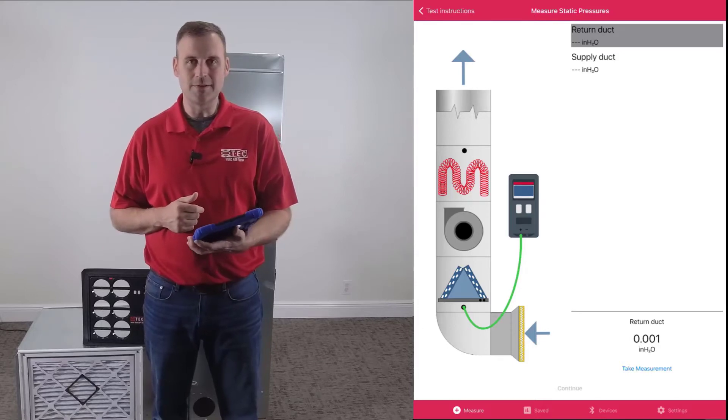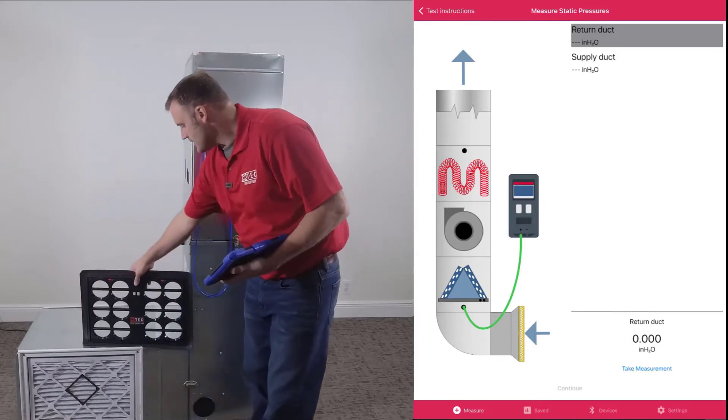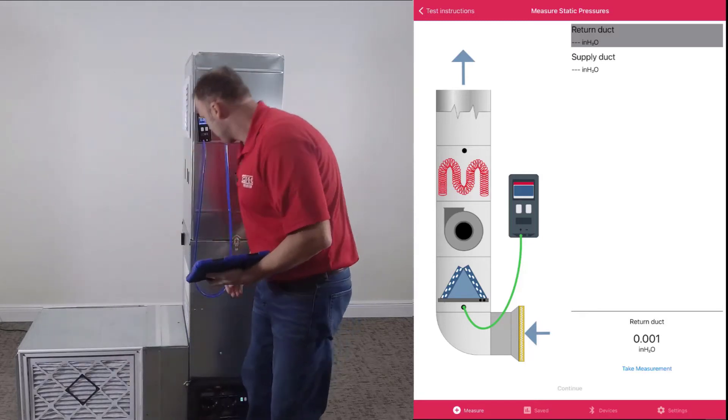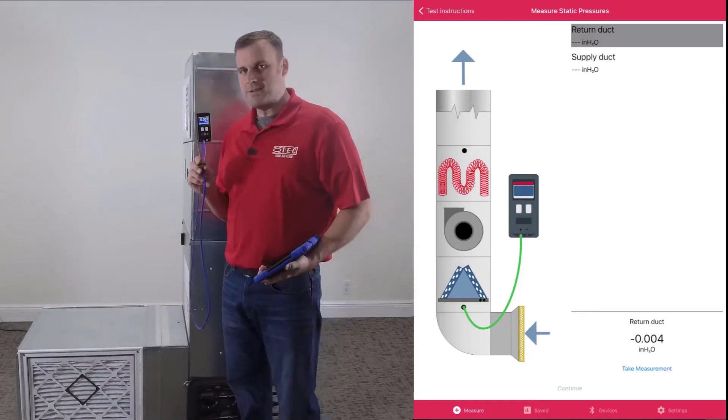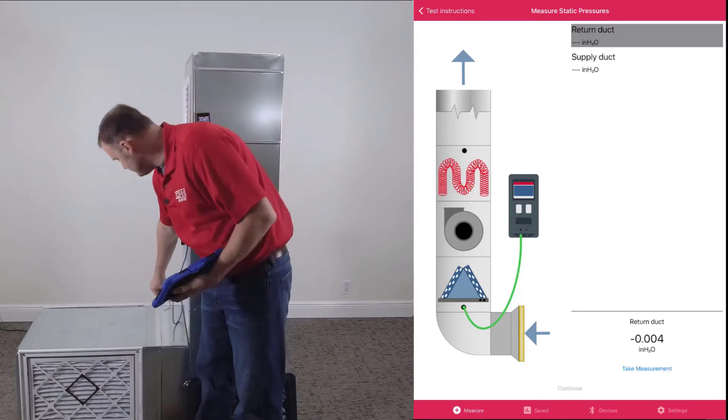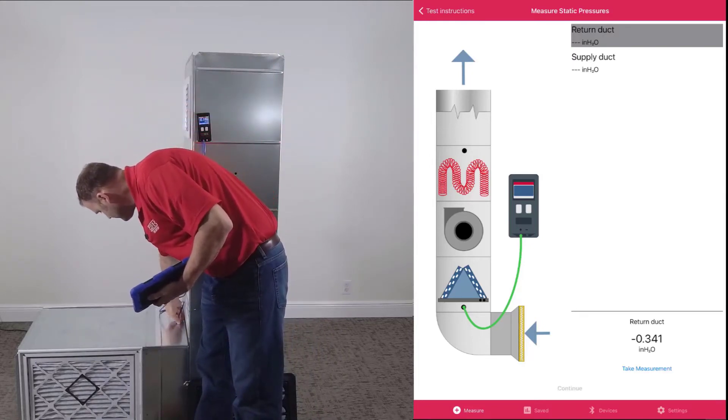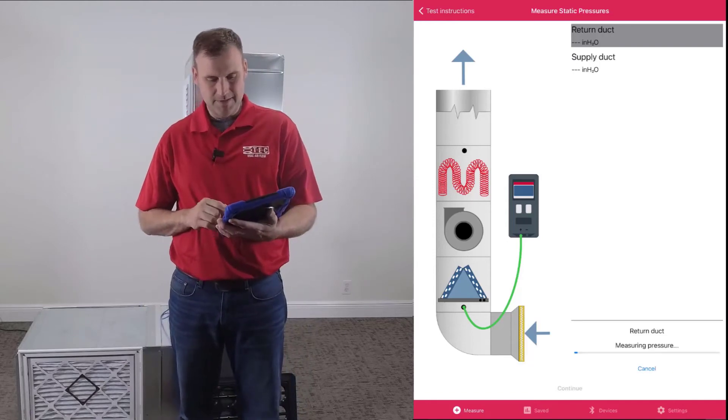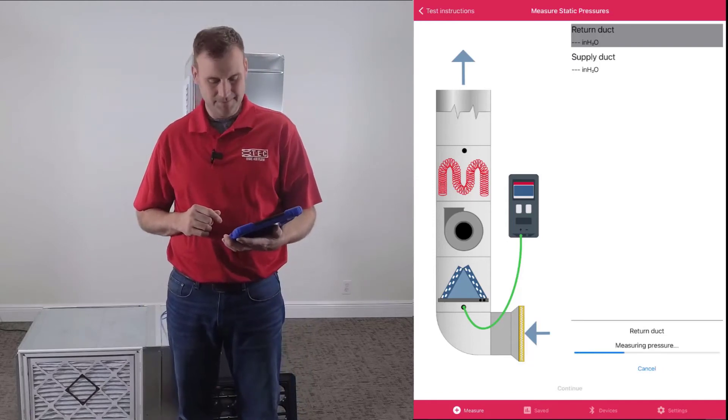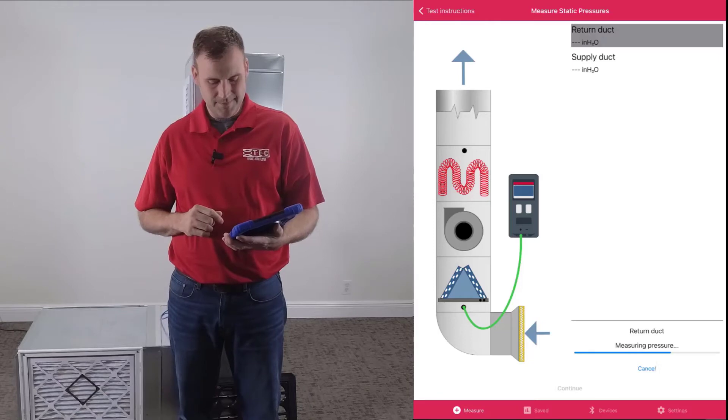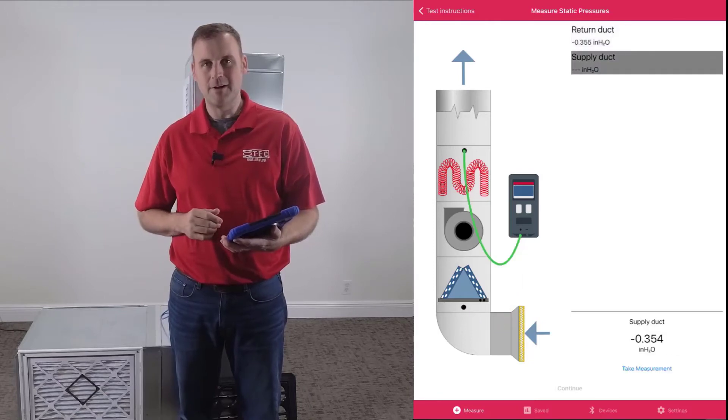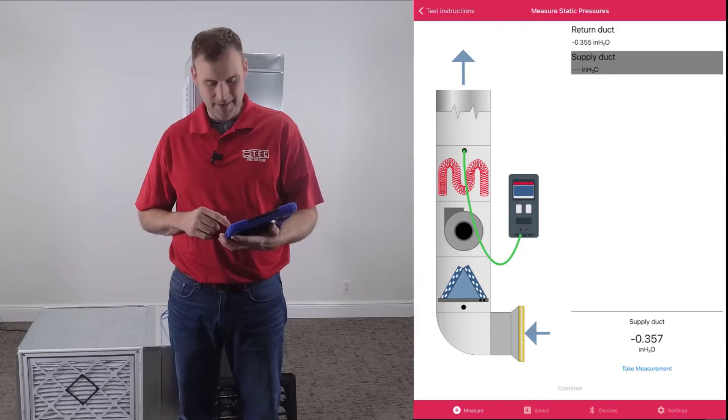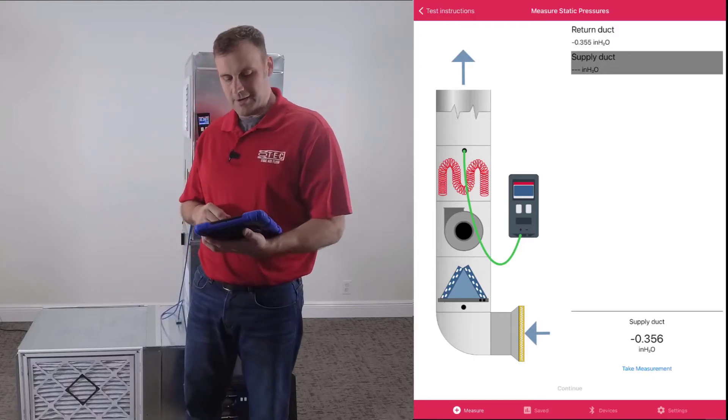You notice it says install the DG8 pressure hose right before the A-coil in the return. Take our static pressure probe. We've got it in the return. Take measurement. Give it a few seconds. We've captured our return static pressure.